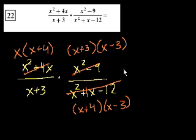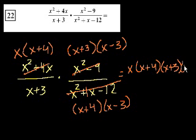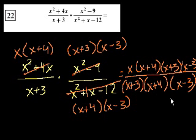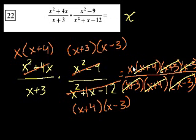Normally I would just start canceling, but I just want to make the point home. So this is equal to x times x plus 4 times x plus 3 times x minus 3, all of that over x plus 3 times x plus 4 times x minus 3. Right? And now we can cancel. We have x minus 3, x plus 4, and x plus 3. And now we're left with just an x. So all of this fancy expression equals just x. And that's choice B.